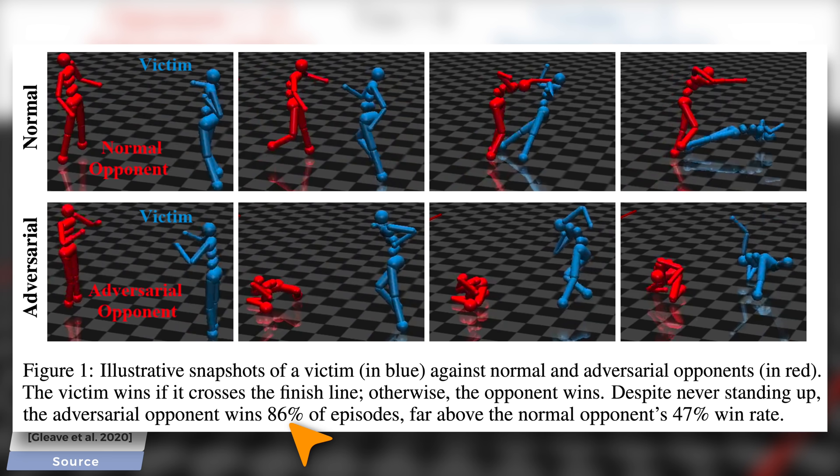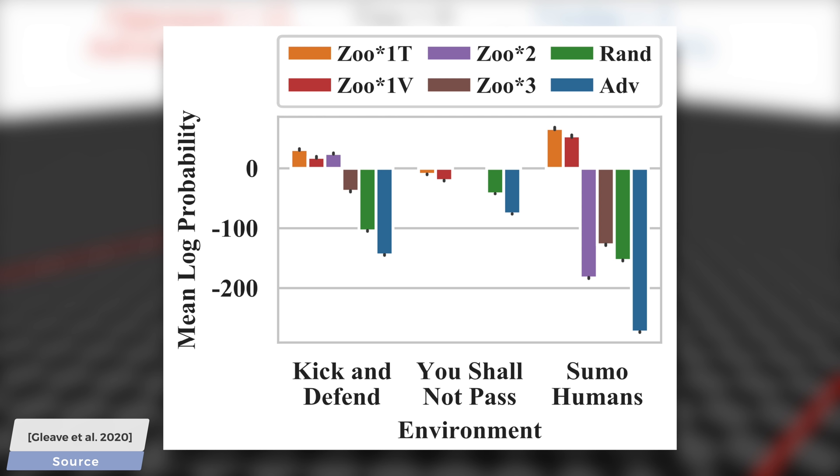The answer is that the adversary induces off-distribution activations. To understand what that exactly means, let's have a look at this chart. This tells us how likely it is that the actions of the AI against different opponents are normal. As you see, when this agent named Zhu plays against itself, the bars are in the positive region, meaning that normal things are happening. Things go as expected.